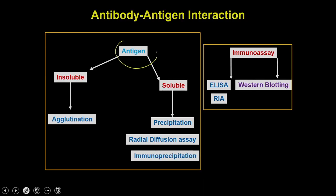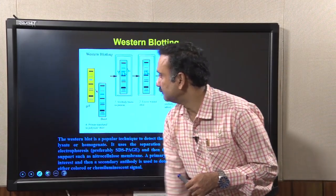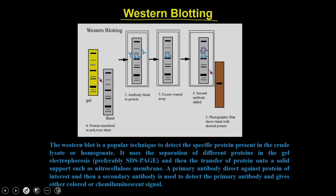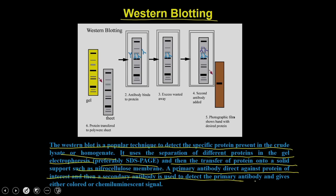This concludes antigen-antibody interactions, covering agglutination, precipitation, radioimmunoassays, immunoprecipitations, and ELISA. Now we are going to discuss western blotting. Western blotting is a technique to detect proteins blotted onto a nitrocellulose membrane, and is a popular method to detect specific proteins present in a crude lysate or homogenate.